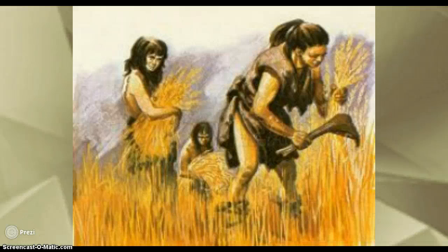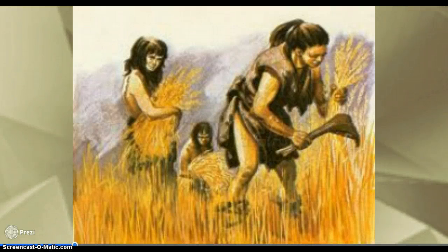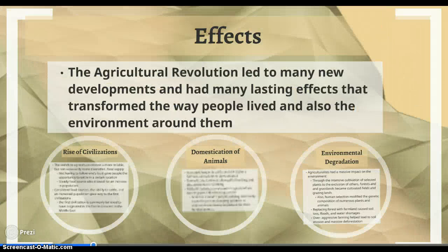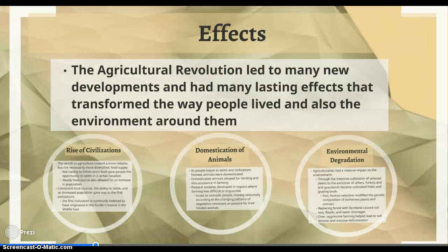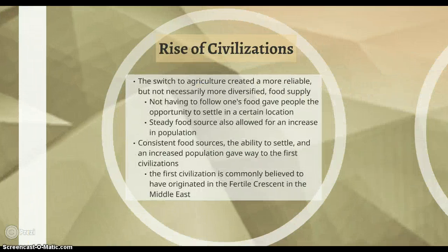It's called a common phenomenon by historians that agriculture developed. Here's just an example of some early agriculturalists using primitive tools to cut down some grain. Basically the effects of the agricultural revolution — there are many new developments and lasting effects. There is the rise of civilizations, like the ones I just went into in detail on the map.